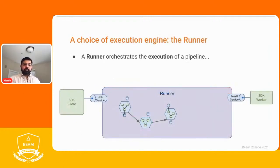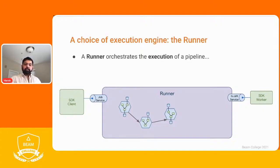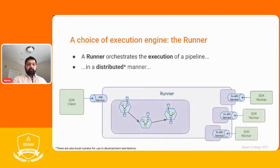The choice of execution engine is called the runner. The runner's job is to orchestrate execution of the pipeline — it takes the graph extracted by the SDK, splits it into chunks, and makes it execute in a distributed fashion. Once executing, the runner calls back into the SDK on the worker side to execute the user-defined functions, which it doesn't know how to execute, and the SDK worker takes over. These runners are useful because they execute pipelines in a distributed manner. There are also local runners used for developing and testing, but for the most part we focus on distributed runners.